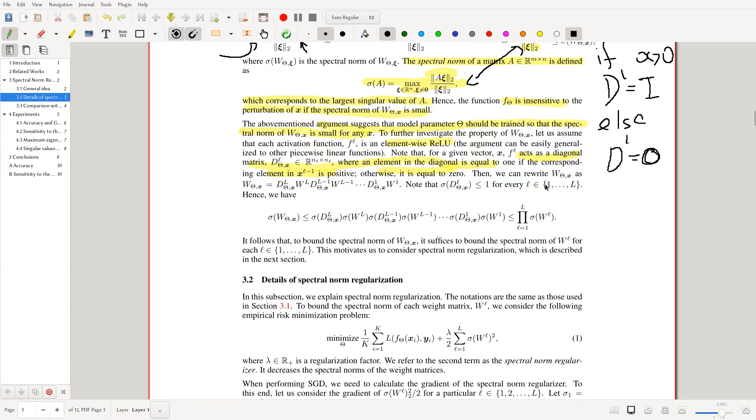And then what this means is we can rewrite this composition of weights and activation functions as this, right? Where we look at the weight times this activation function ReLU and so on, right? And then note that this value is always bounded above by one because this DL is either diagonal or zero. So yeah. So we have that the spectral norm is bounded above by one.